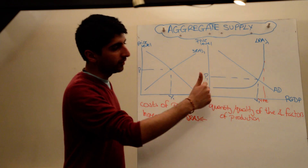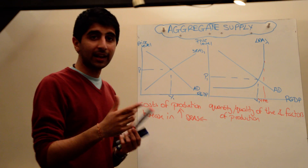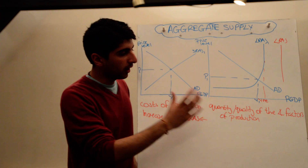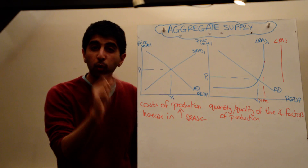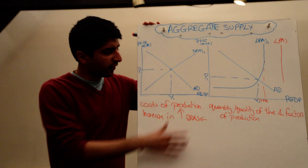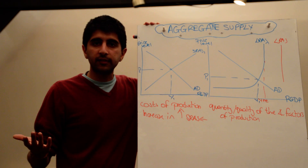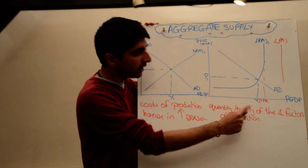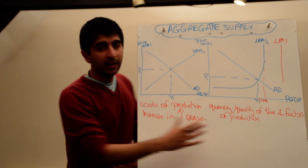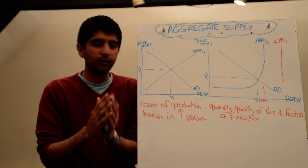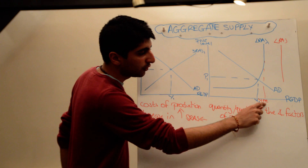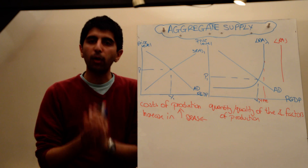Long-run aggregate supply — this is the Keynesian version of it. You could have also learned the classical version, which is just a vertical curve. Long-run aggregate supply, whatever curve you've learned, is determined by the quantity and the quality of the factors of production available in the economy. This determines the size of the economy — how much the economy can actually produce. Which is why when the curve becomes vertical, we're at the full employment level of output, producing the maximum the economy can possibly produce given the levels of factors of production.